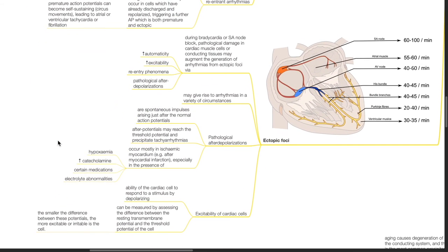Ectopic foci. During bradycardia or SA node block, pathological damage in cardiac muscle cells or conducting tissues may augment the generation of arrhythmias from ectopic foci by increased automaticity, increased excitability, re-entry phenomena, or pathological after-depolarizations. Ectopic foci may give rise to arrhythmias in a variety of circumstances.